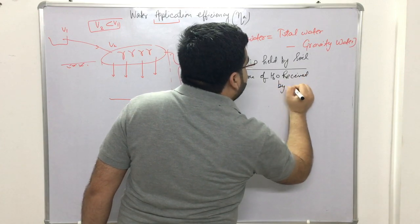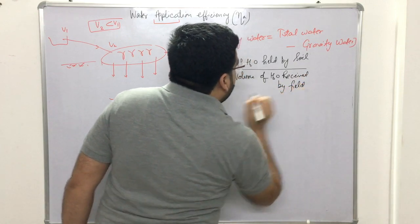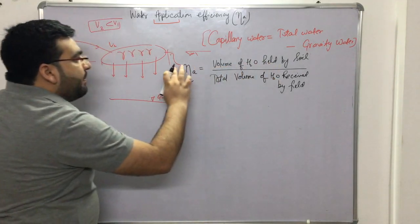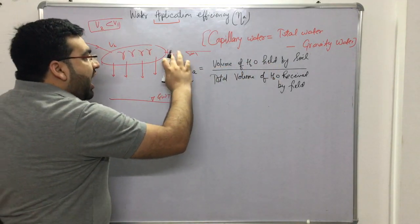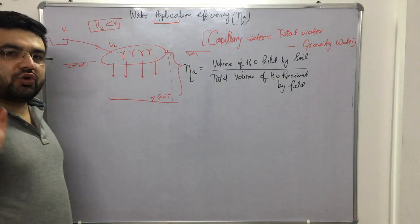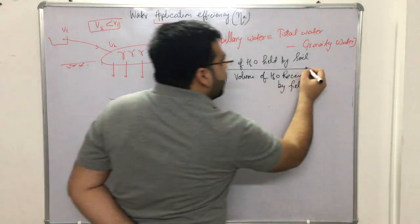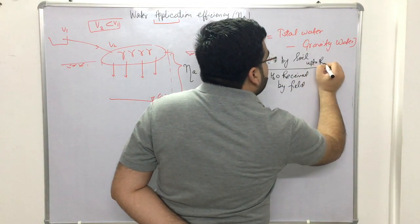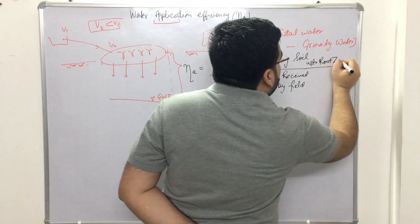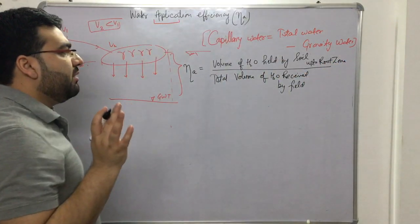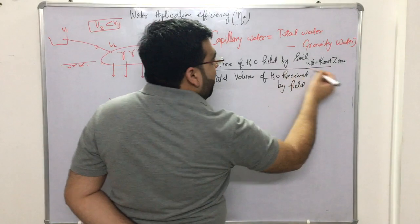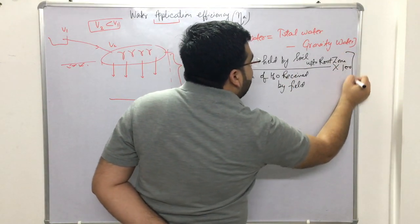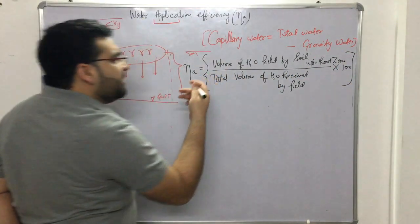More specifically, it is the volume of water held by the soil up to the root zone, divided by the total volume of water received by the field. Multiplying by 100 gives the efficiency in percent.